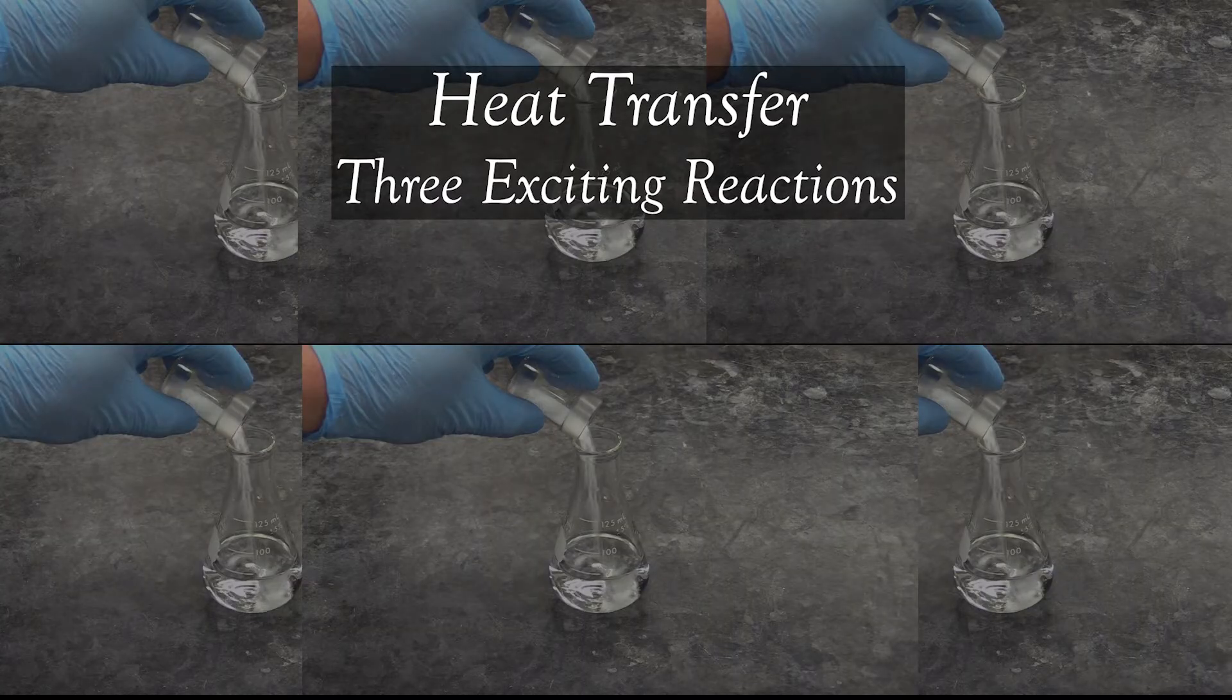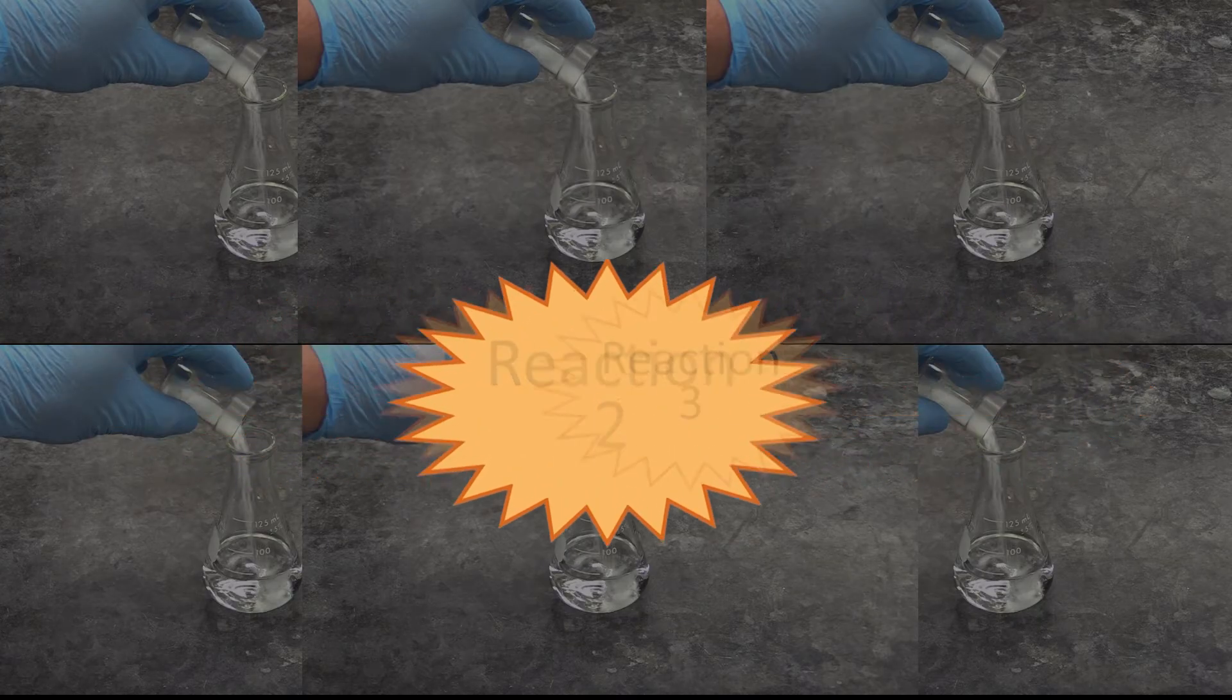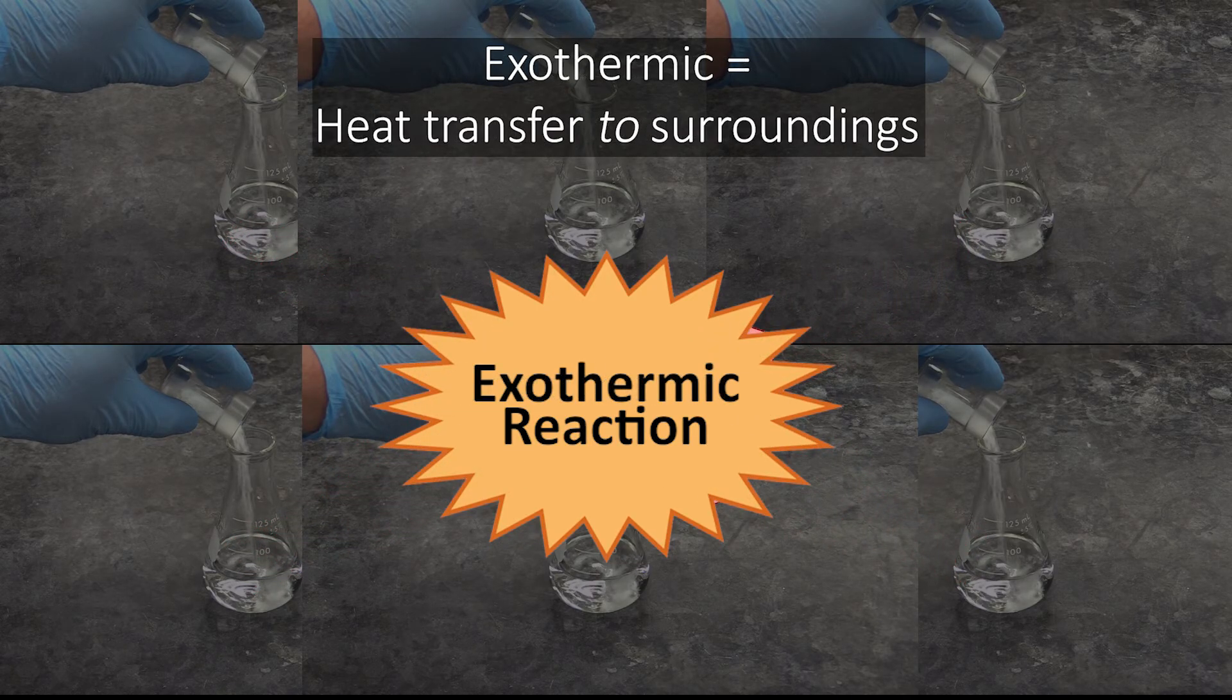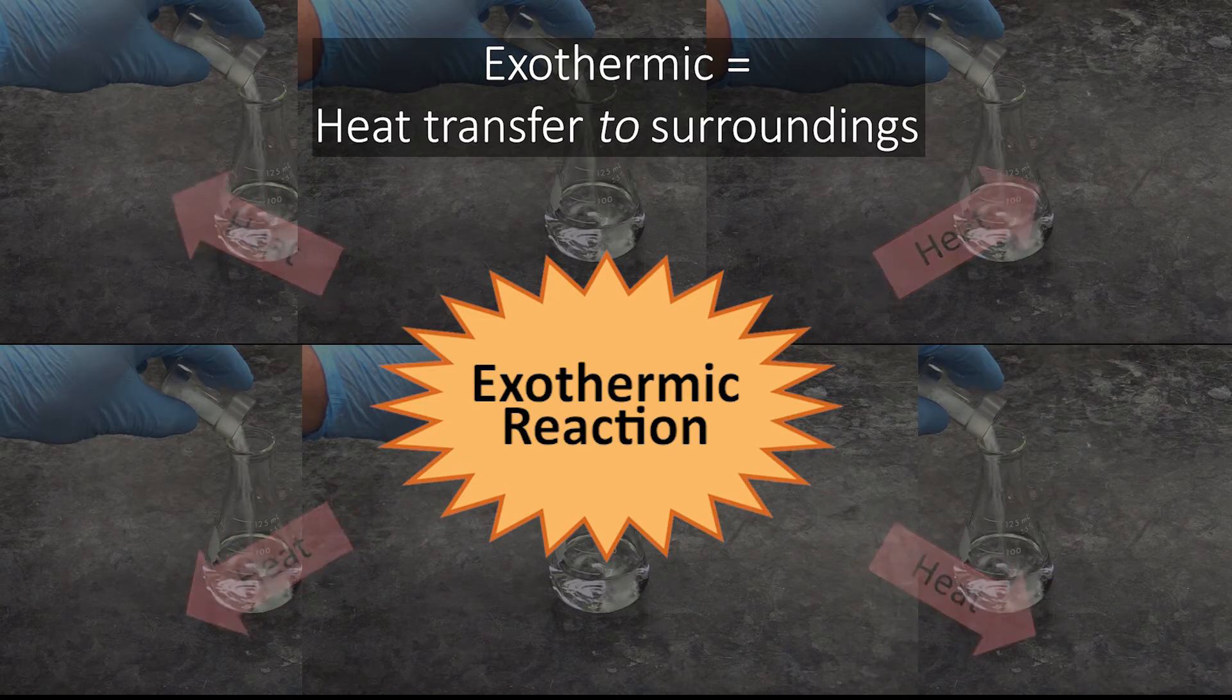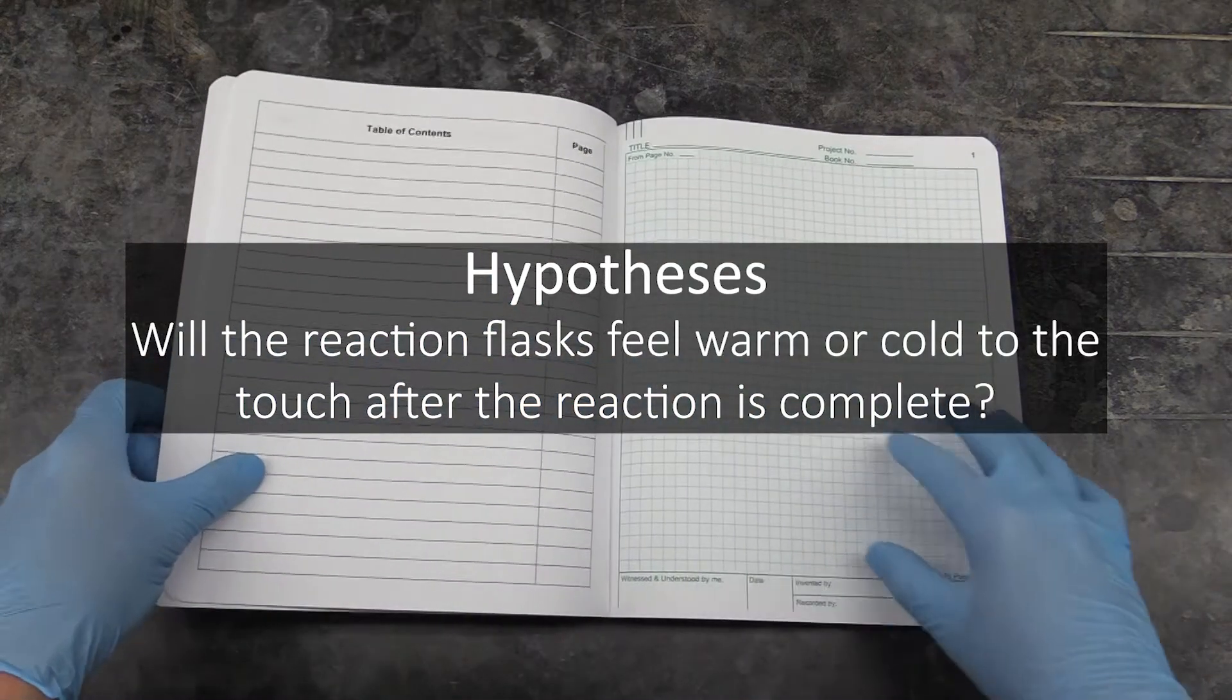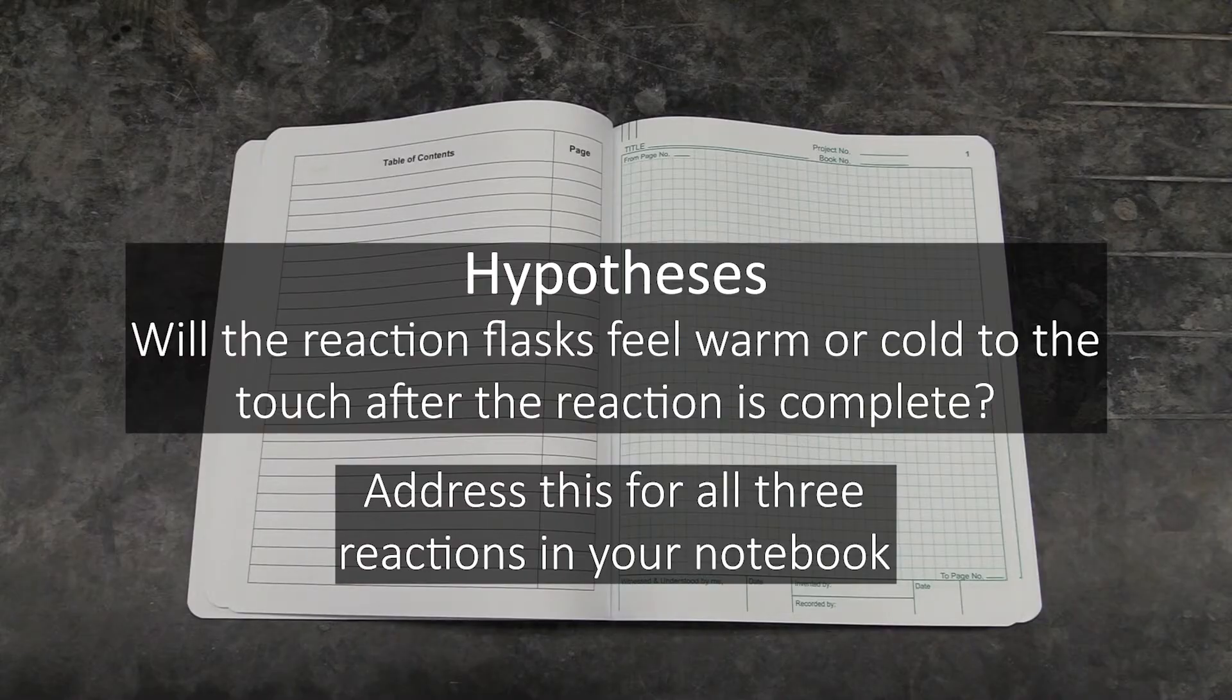The heat transfer experiment will involve not one, not two, but three different reactions. These will either be endothermic reactions that absorb heat from their surroundings, or exothermic reactions that evolve heat to their surroundings. Your procedure document will tell you which is which. You will need to hypothesize, in your notebook, whether the flasks these take place in will feel warm or cold to the touch after the reaction is complete.